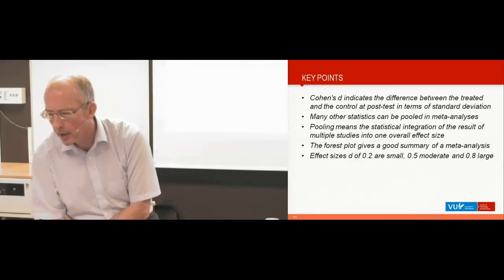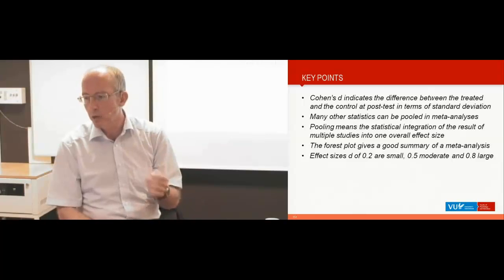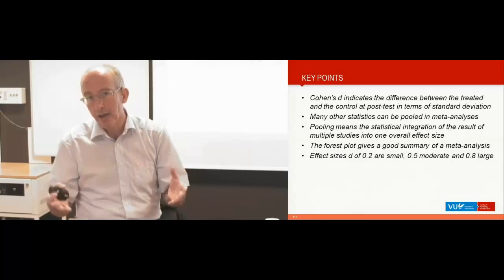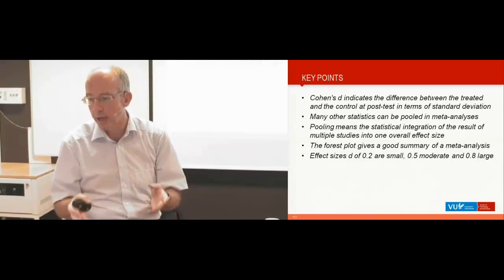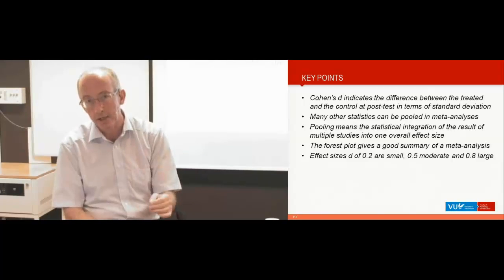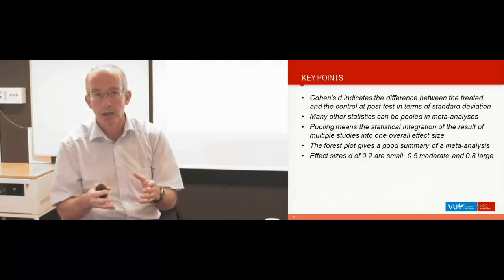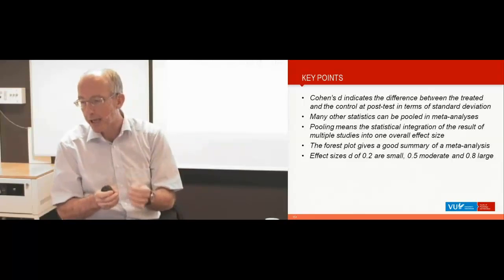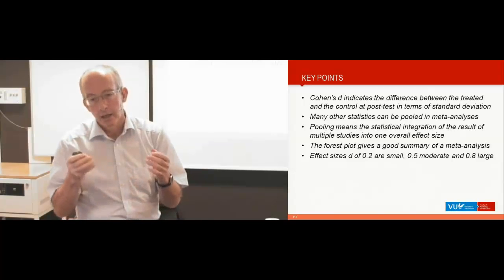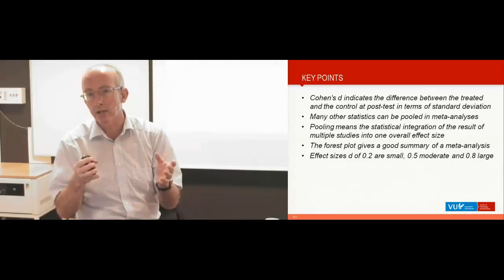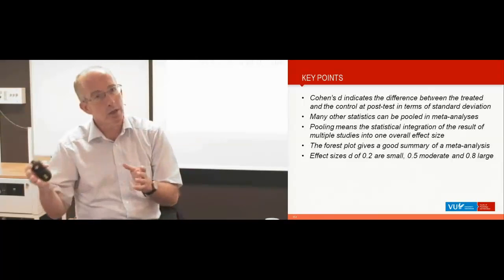The key points: Cohen's D indicates the difference between a treatment and a control group at post-test in terms of standard deviations. You can use many other statistics — basically anything with a standard error can be pooled in meta-analysis. Pooling means you integrate the results of individual effect sizes into one overall effect size. The forest plot of the individual studies and effect sizes is an excellent summary of the meta-analysis. Effect sizes are a statistical measure, and you can say that an effect size of 0.2 is small, 0.5 is moderate, and 0.8 is large.